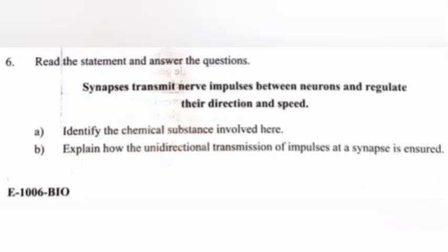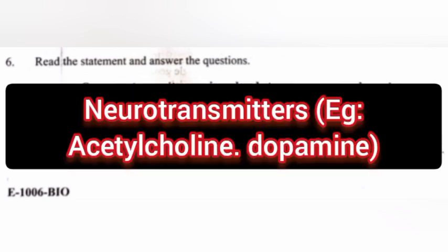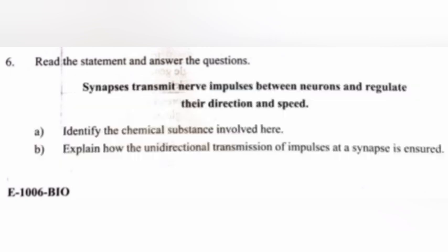Question 6: Read the statement and answer the questions. Synapses transmit nerve impulses between neurons and regulate their direction and speed. Part a: Identify the chemical substance involved here. Answer: Neurotransmitters — for example, acetylcholine and dopamine.